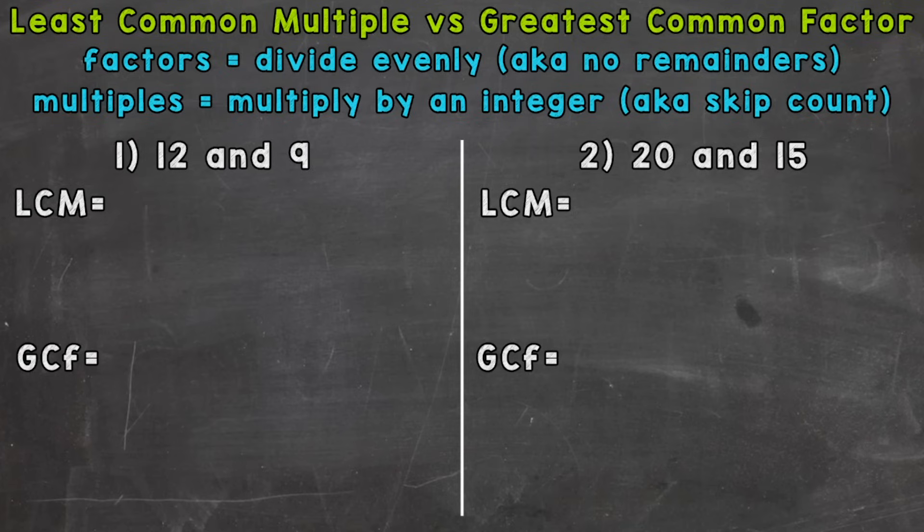So let's jump right into number one where we have 12 and 9. And we'll start with the LCM, which stands for least common multiple. And we'll need to write out the multiples of 12 and 9. So we'll start with 12. And remember, multiples, we need to multiply by integers in order to see what the multiples of 12 are.